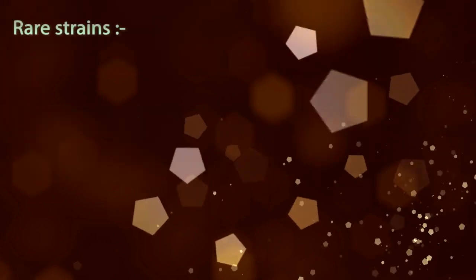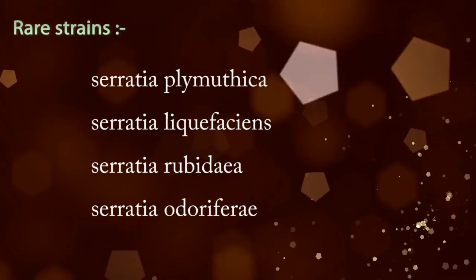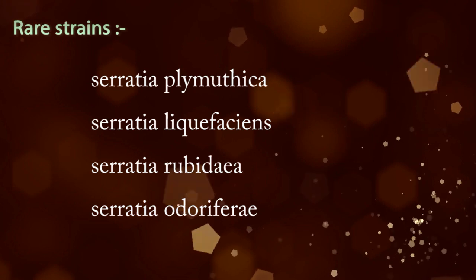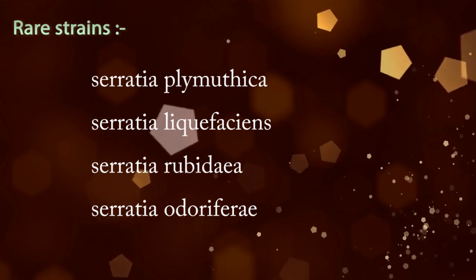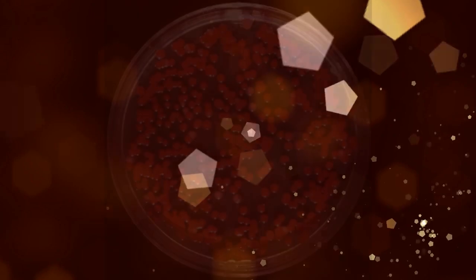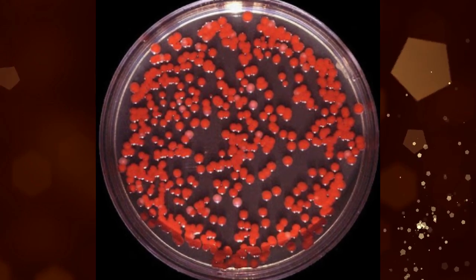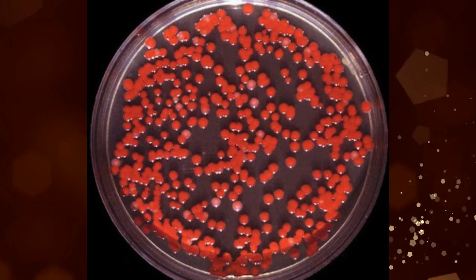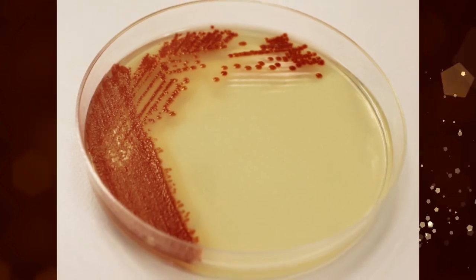However, rare strains of Serratia plymouthica, Serratia liquefaciens, Serratia rubidaea, and Serratia odorifera have caused diseases through infection. Members of this genus produce a characteristic red pigment, prodigiosin, and can be distinguished from other bacteria.